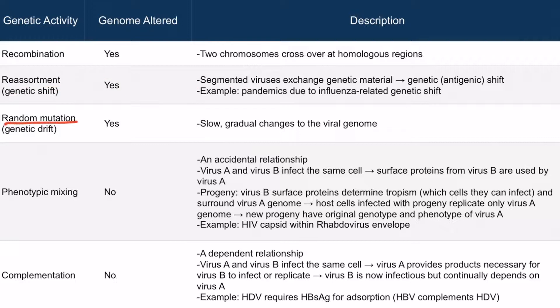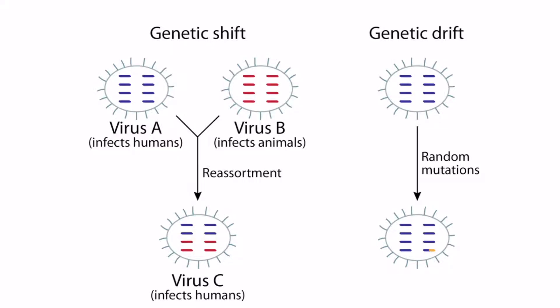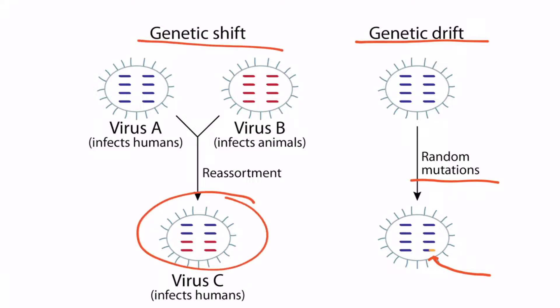Now let's talk about random mutation, which we can also call genetic drift. This is far less dangerous than genetic shift. Yes, it's an alteration to the genome, but it's a slow and gradual change, so it doesn't cause pandemics like genetic shift. Looking at the right side of the diagram, we can see that random mutations occur over time, resulting in a tiny alteration represented by a small yellow mark — far smaller than the drastic change seen with virus C in genetic shift.